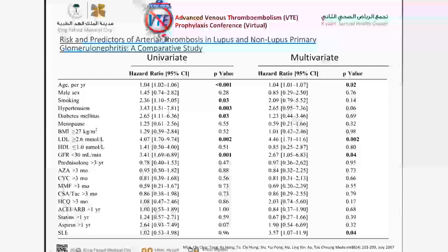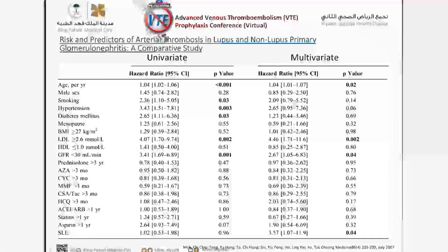Knowing that, let us look at the risk factors and predictors for arterial and venous thrombosis in patients with lupus. This study compared patients with glomerulonephritis related to SLE versus non-SLE-related glomerulonephritis. SLE was found to be a significant risk factor for thrombosis. Other factors like dyslipidemia and renal impairment are also considered risk factors for thrombosis, either in lupus or non-lupus glomerulonephritis patients.